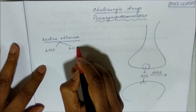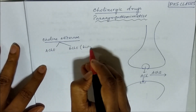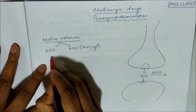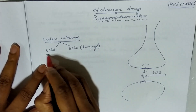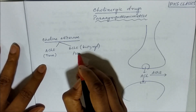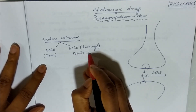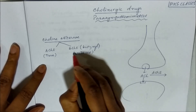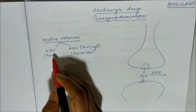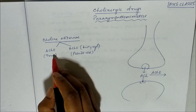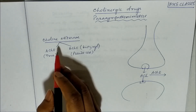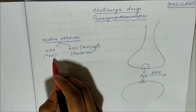Butyrylcholinesterase is also called BCSE. Acetylcholinesterase is called the true cholinesterase, and butyrylcholinesterase is called pseudocholinesterase. Acetylcholinesterase is found at all cholinergic sites, in RBCs, and in the grey matter of the nervous system.